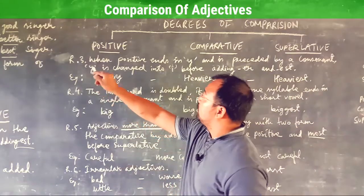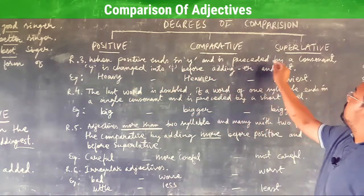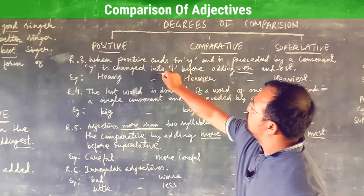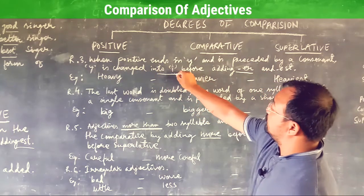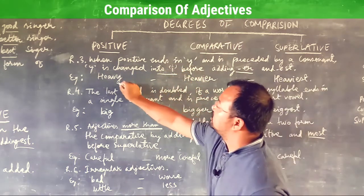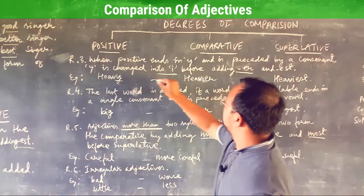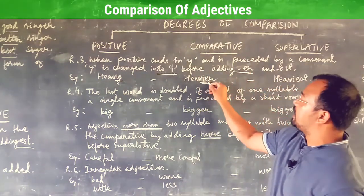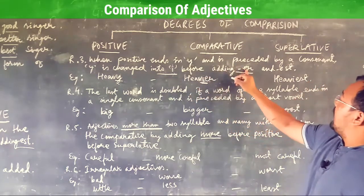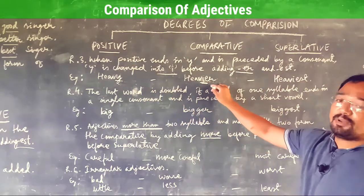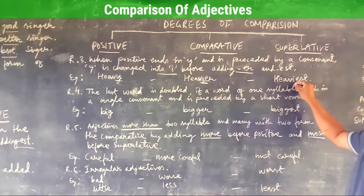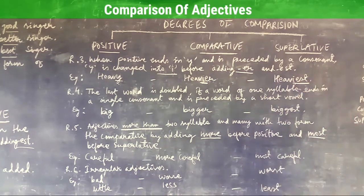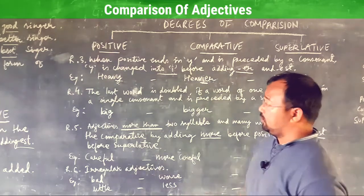Rule number three: when a positive degree adjective ends in -y preceded by a consonant, the -y changes to -i before adding -er or -est. For example, 'heavy' ends with -y; in the comparative degree the -y changes to -i and -er is added, giving heavier. In the superlative degree the -y changes to -i and -est is added, giving heaviest.